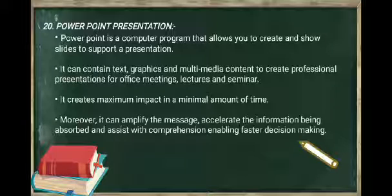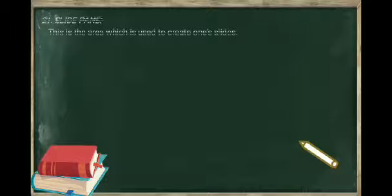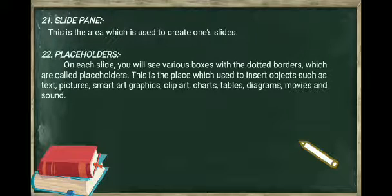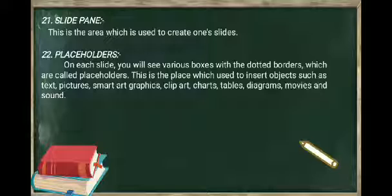Let us highlight the components of PowerPoint. The four major components are slide pane, placeholder, thumbnail and note pane. Let us discuss about them one by one. Slide pane - this is the area which is used to create one slide. Placeholders - on each slide, you will see various boxes with dotted borders which are called placeholders.